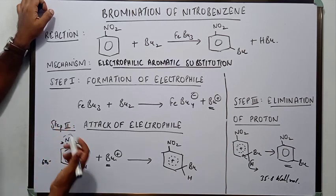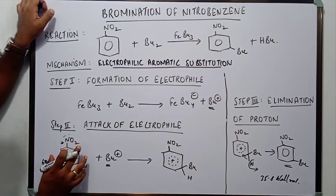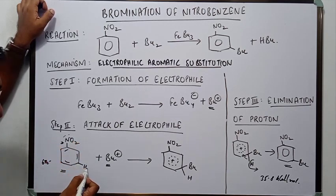That pulling of electron creates a positive charge on the ortho and para positions. Relatively the higher electron density is at the meta position. And therefore Br+ would attack the meta position only.